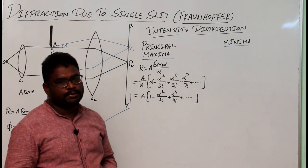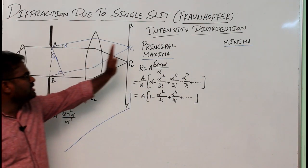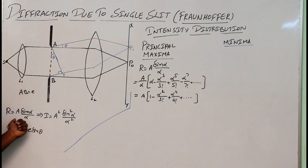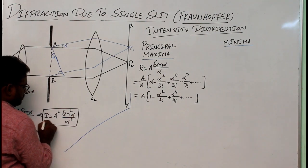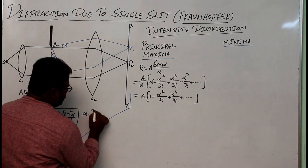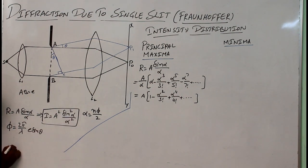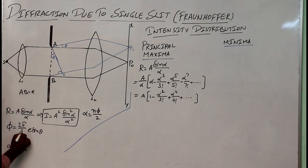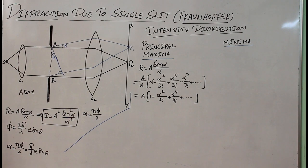We are calling it principal maxima and we'll conclude why it has the highest value at the end. The resultant amplitude on the screen due to n number of SHMs is R = A·sin(α)/α, and the intensity is I = A²·sin²(α)/α². The value of α is n·φ/2. Calculating α: it equals (π/λ)·e·sinθ, since the 2's cancel from n·φ/2 with φ = 2π/λ·e·sinθ. This expression for α is useful for subsequent calculations.